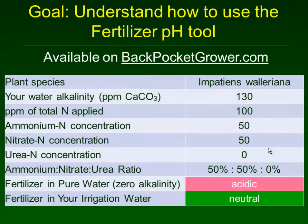The goal of this video is to help you understand how to use a fertilizer pH tool, which you're going to find at backpocketgrower.com. When you use that tool it's going to ask you for information on a number of factors: the plant species, the alkalinity of your irrigation water, the concentration of the different nitrogen forms in your fertilizer, and from that information it's going to predict the overall acidic, neutral, or basic effect of that combination.